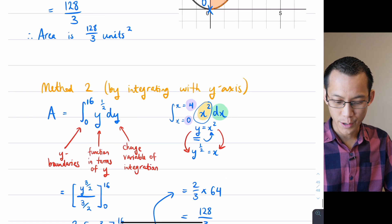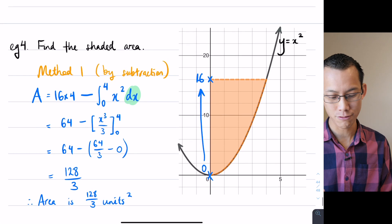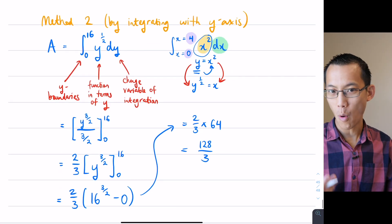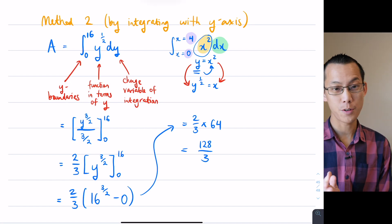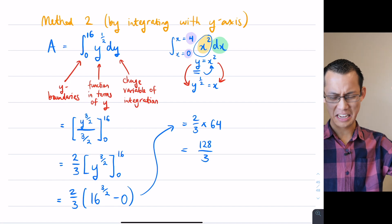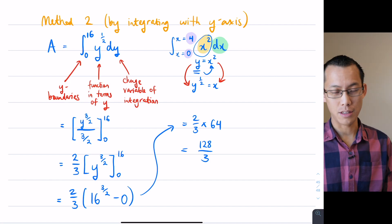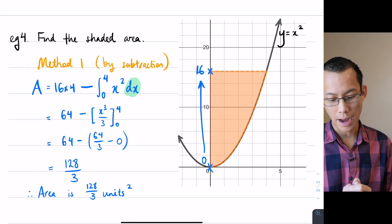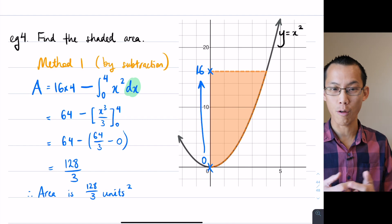Method one: integrating normally doesn't give us the area we want, but if you subtract it from a rectangle you get the correct area — you just have to identify them carefully. Method two: because we noticed this area was bounded to the y-axis, we could integrate with respect to y instead of x and it works out fine. Now for the vast majority of you, method two will feel unfamiliar — you have to integrate with respect to a different variable, change what the function looks like, and deal with different boundaries. Honestly, if I were doing this in an exam I would just as happily use method one; I'm much better at integrating with respect to x and the functions are already given that way.